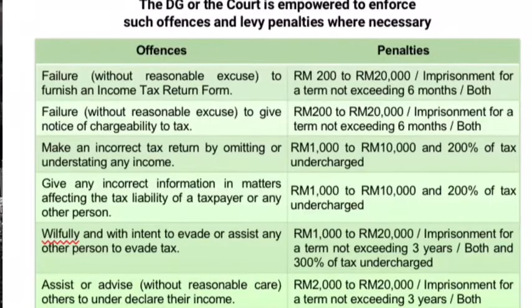I will explain about the Director General's power to enforce charges of offenses and levy penalties when necessary. First is the offense of failure without reasonable excuse to furnish an income tax return form — they have to pay penalties of RM200 to RM20,000 or imprisonment for a term not exceeding 6 months, or both. They face the same penalties for failure without reasonable excuse to give a notice of chargeability to tax.